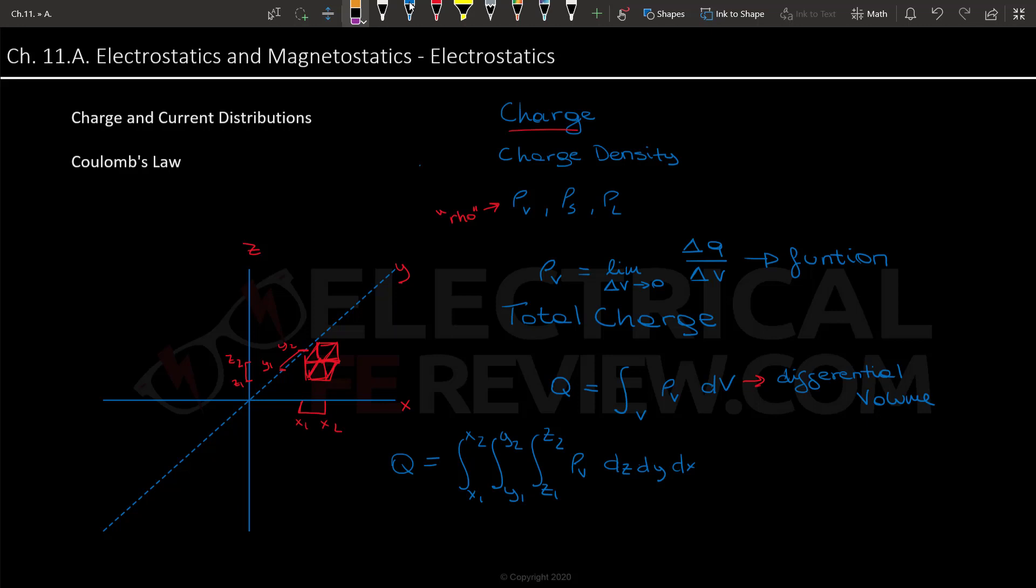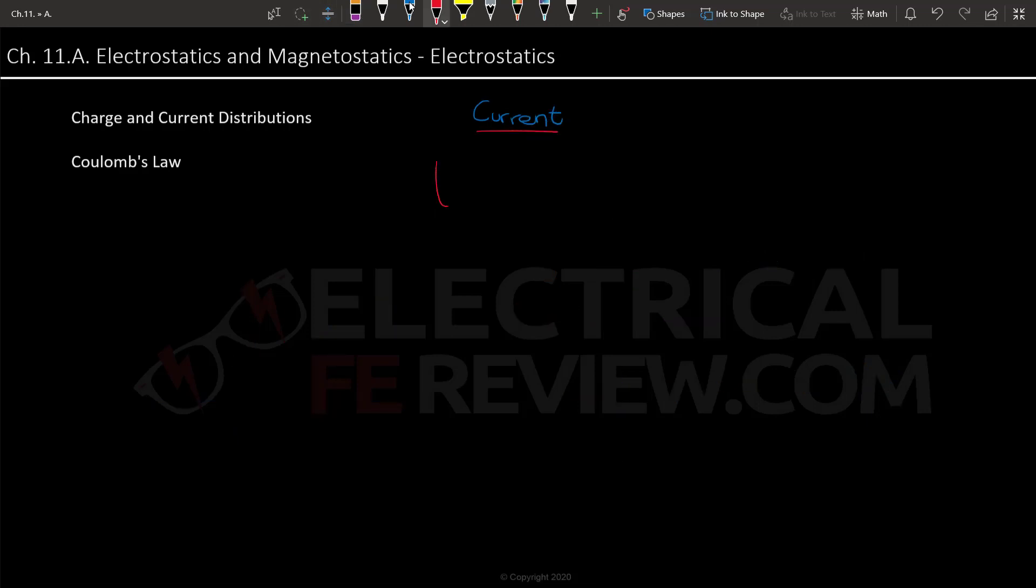So charge is when these particles are fixed, but if one of these charged particles have a velocity, then we have something that's called current. And so now let's go over current distribution. Say we have a cross section, and going through this cross section is a charged particle with a velocity u. Because we are in electrostatics, we are assuming a constant electrical field.